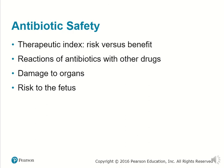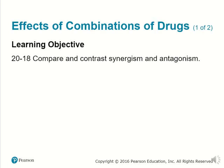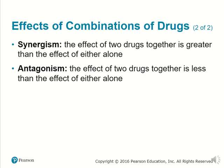Antibiotic safety includes the therapeutic index, which weighs the risk versus the benefit of using an antibiotic. It includes a list of reactions antibiotics have with other drugs, a list of organs that could be damaged through use or overuse, as well as risk to fetuses in pregnancies. In the case of combining drugs, there are synergistic effects where the effect of two drugs together is significantly greater than either alone, but also antagonistic effects where the combined effect is significantly less than either alone.